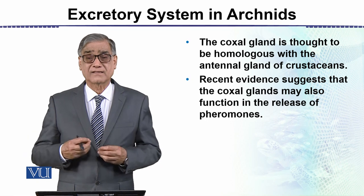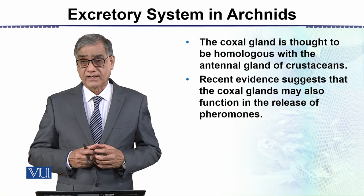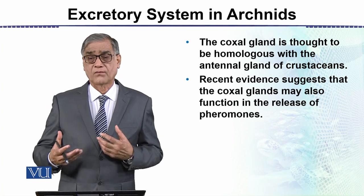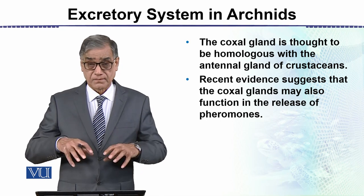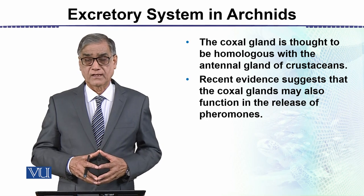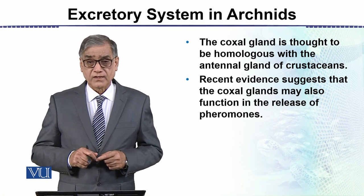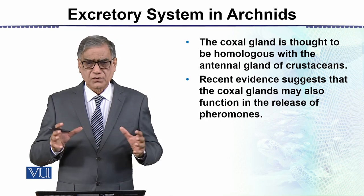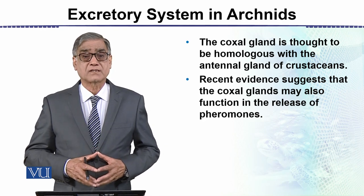A recent advancement is that these coxal glands also produce pheromones — chemicals that attract animals of the opposite sex of the same species. They are released in very small amounts but have a very pronounced effect. So the coxal glands have a dual function: removing nitrogenous waste and producing pheromones. This concludes the excretory system in arachnids.